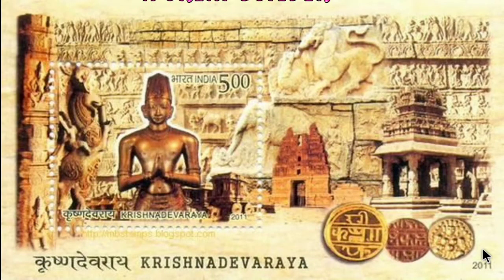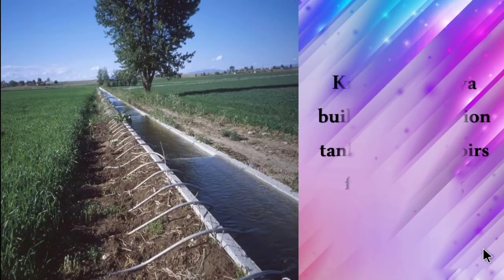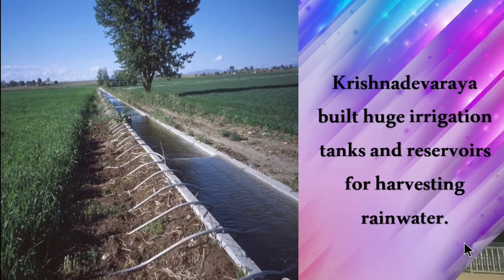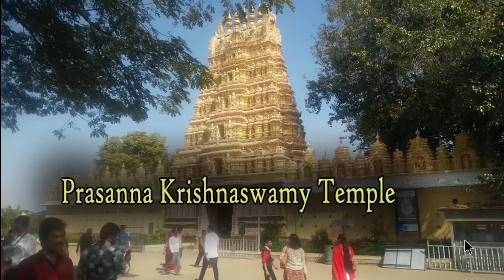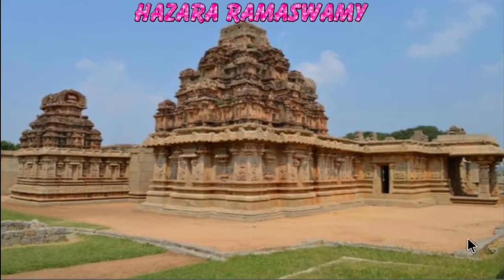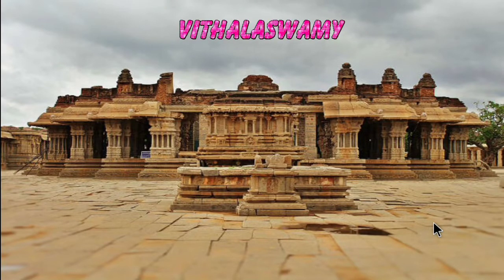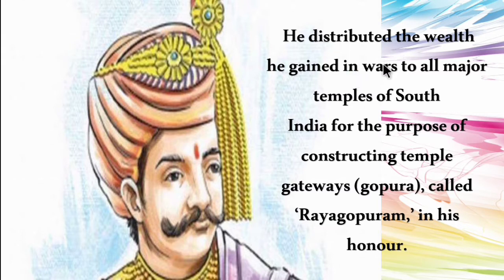Krishna Devaraya was a great builder. He built huge irrigation tanks and reservoirs for harvesting rainwater. He also built the Krishna Swami temple, Hazara Ramaswamy temple, and Vitalaswamy temple. He distributed the wealth gained in wars to major temples of South India for constructing temple gateways — Gopuras — called Raya Gopuram in his honor.